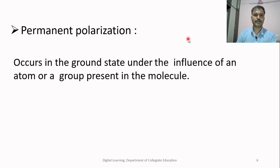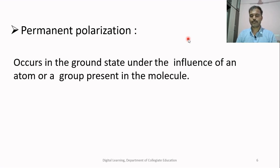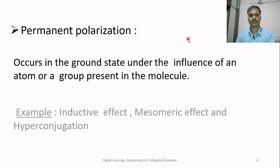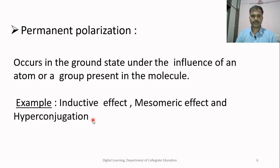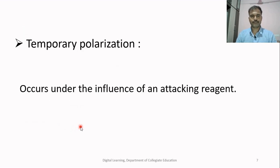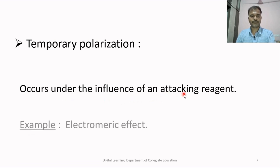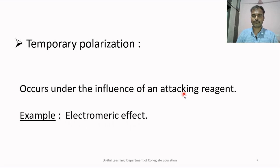Permanent polarization occurs in the ground state under the influence of an atom or group present in the molecule. The best examples are inductive effect, mesomeric effect and hyperconjugation. Temporary polarization occurs under the influence of an attacking reagent. The best example is electromeric effect.